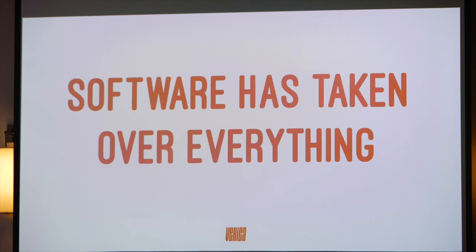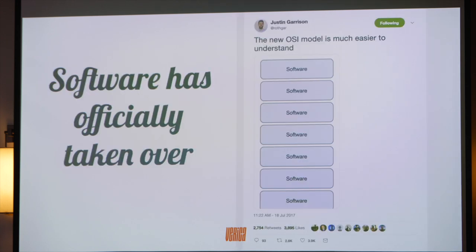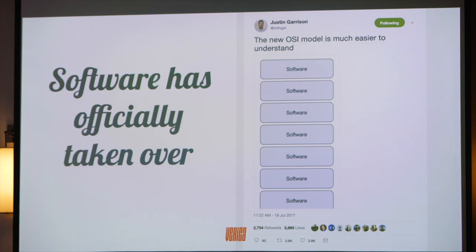It's about thinking differently about the problem set. The things we've been doing in the past don't necessarily need to be what we do in the future. Software is kind of taking over everything — society has become so dependent on it. We have a responsibility as engineers to ensure we're building safe software.